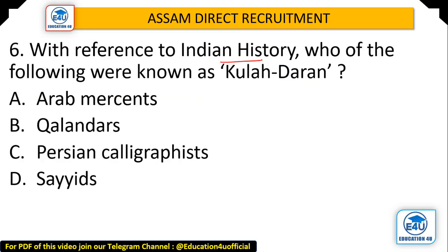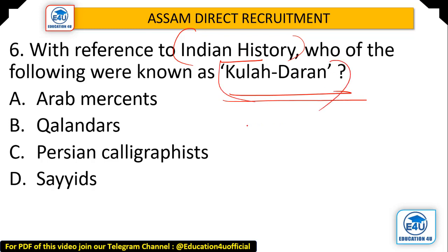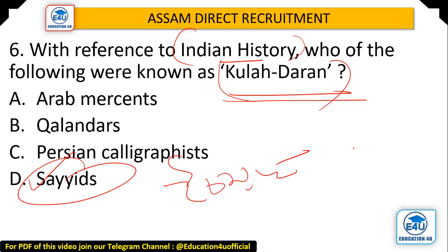Question: With reference to Indian history, which of the following were known as 'Kulah Dharan'? Options: Arab traders, Kalandars, Persian calligraphers, and Sayyids. The answer is Number D — Sayyids. They were a group of people who wore a particular cap, and because they wore that kulah (cap), they were called 'Kulah Dharan'.